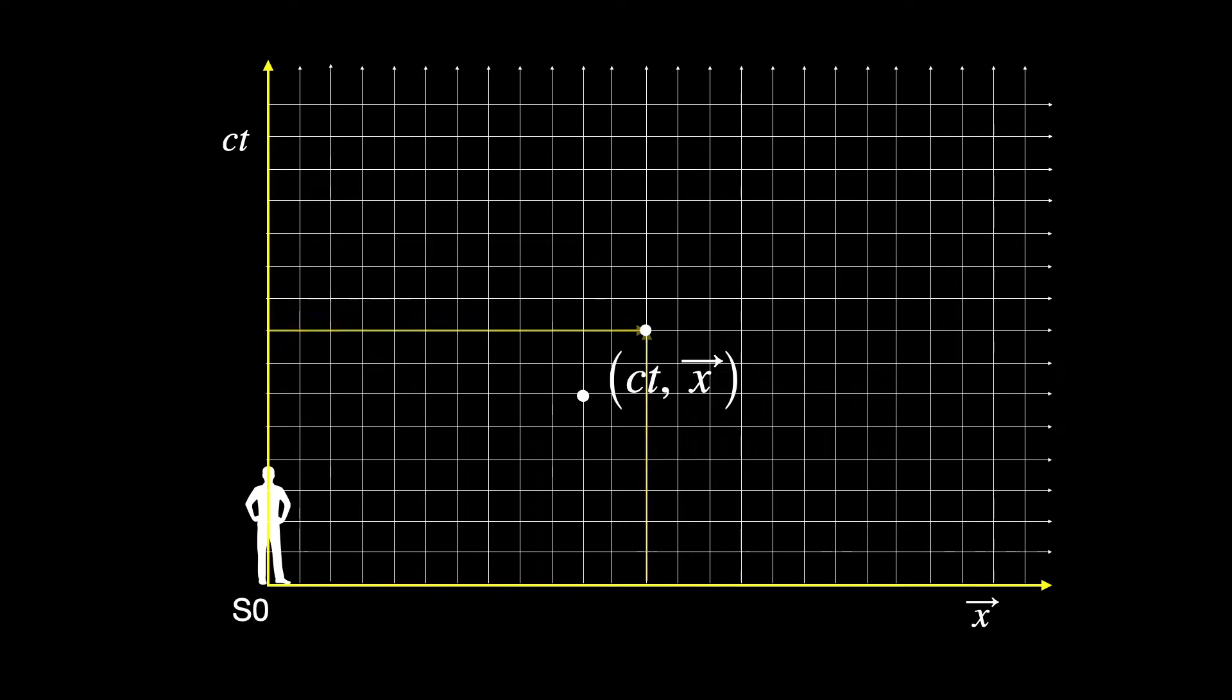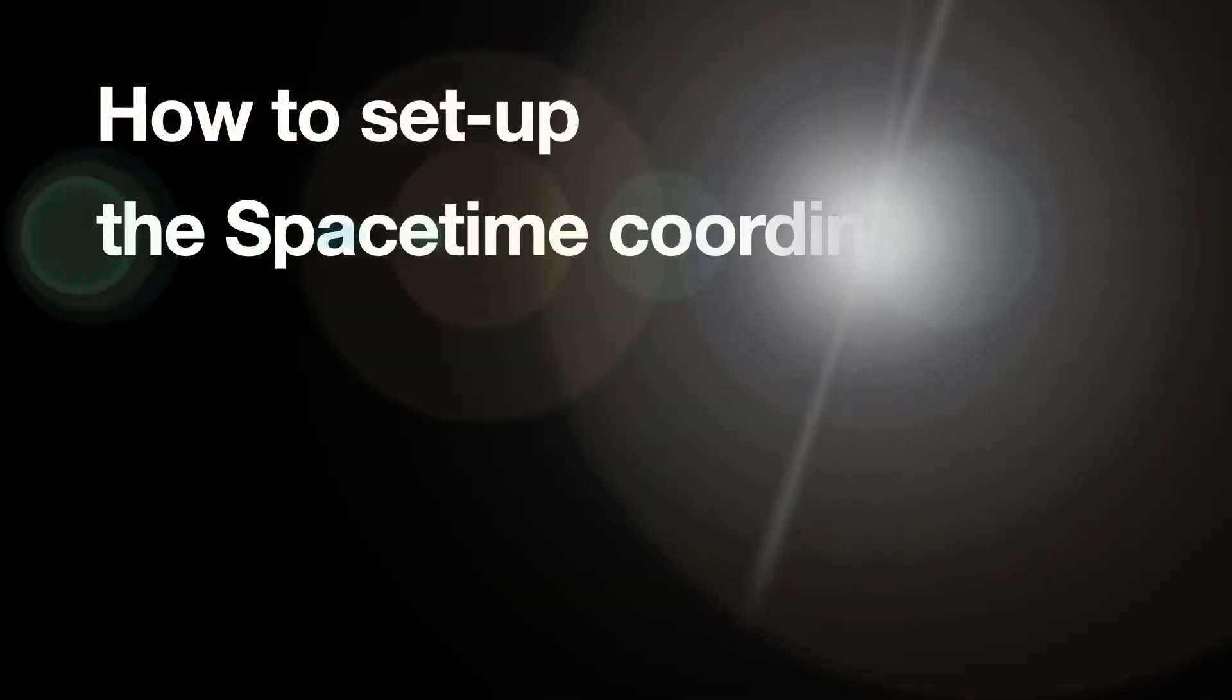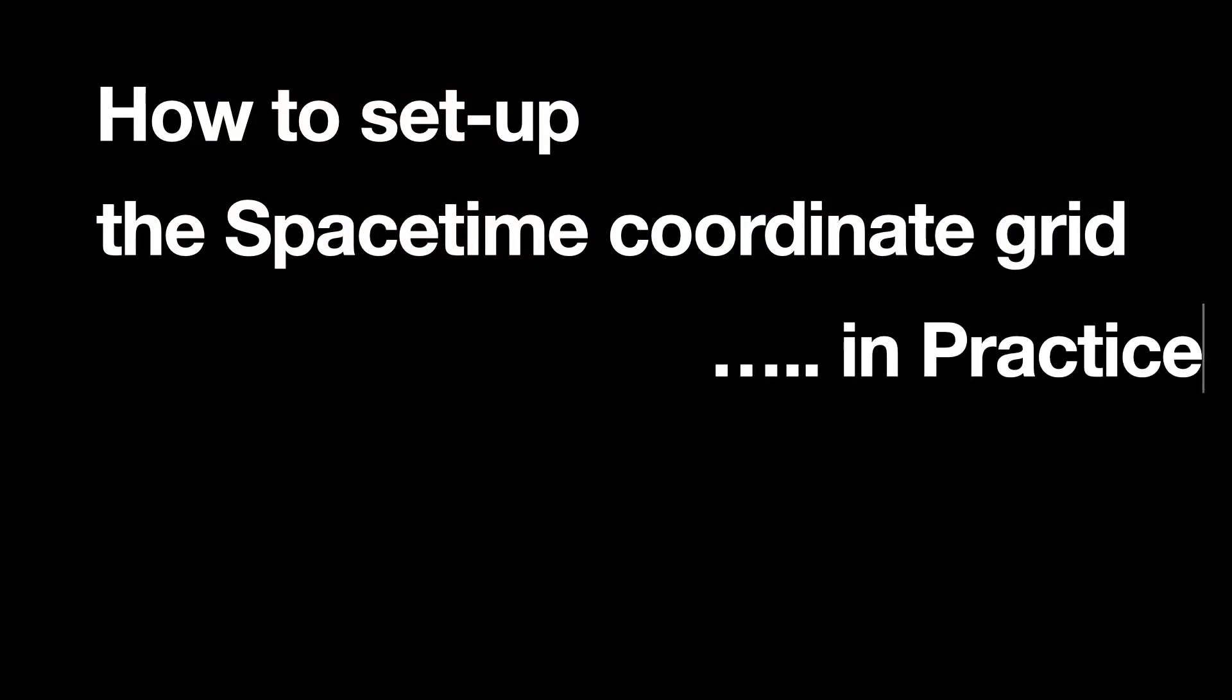But that is on a piece of paper. That's not what I'm talking about. How do we assign coordinate values to these events playing out in the real world? We are going to figure out precisely this. How an observer determines the space and time coordinate values of actual events?